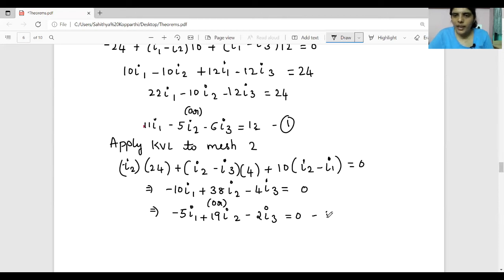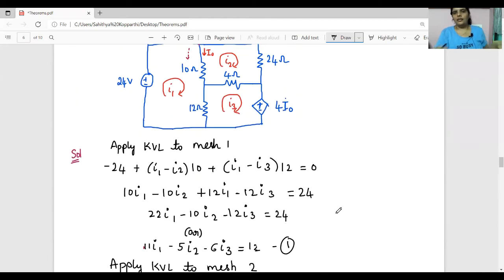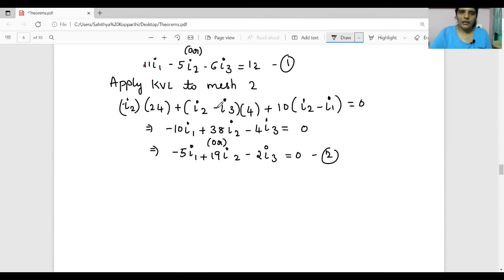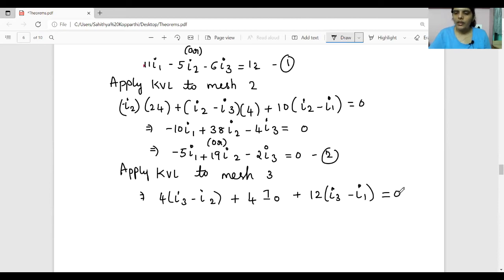Similarly, apply KVL to mesh 3. We will get 4×(I3 - I2) + 4I0 + 12×(I3 - I1) = 0. But what is I0?